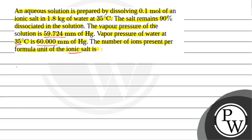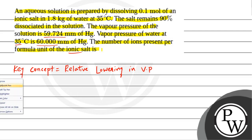The key concept here is relative lowering in vapor pressure. Relative lowering in vapor pressure is simply a colligative property — a property that depends on the number of particles in solution. Relative lowering in vapor pressure is denoted as (P° - PS) divided by P°, and this is equal to i into X_B, where i is the van't Hoff factor and X_B is the mole fraction of the non-volatile solute.